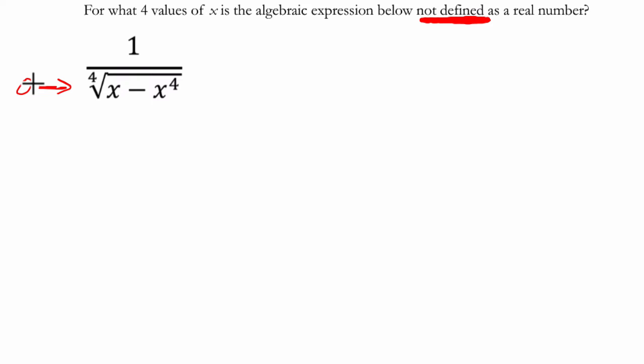In order to figure that out, I'm going to say, when is x minus x to the 4th equal to 0? When does that happen? I have these two terms, and they both have a common factor, which is x. So I try to factor that out, and I get 1 minus x to the 3rd.